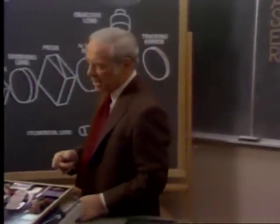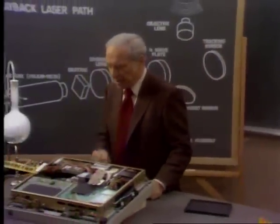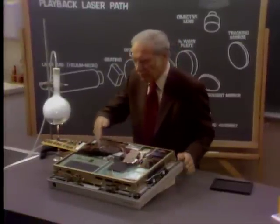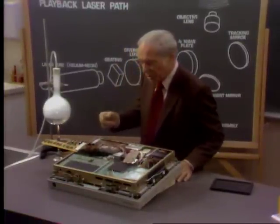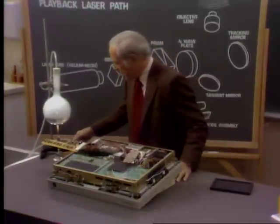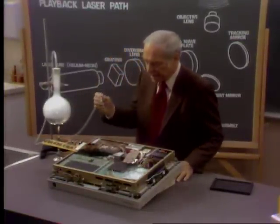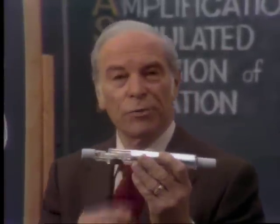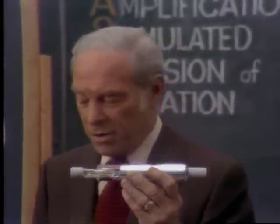Well, let's look at the actual laser beam as it appears inside the Pioneer laser disk player. We've exposed the beam itself so that you could see it better — now I'll add a little CO2 fog. See it? In the Pioneer player, the laser beam is emitted from a helium-neon laser tube that looks like this. Looks sort of like a fluorescent lamp, doesn't it?